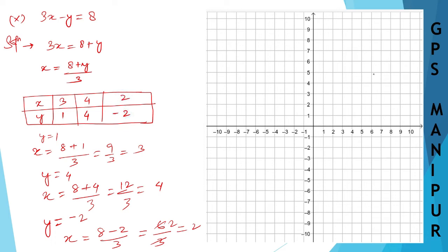Now let me draw the graph. This is the x-axis and this is the y-axis. When x is 3 and y is 1, this point comes and meets here — that is the point 3 comma 1. Next, when x is 4 and y is also 4, both come and meet here — that is the point 4 comma 4.